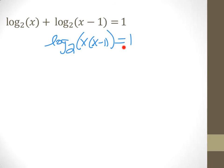Let's convert: 2 to the first equals what's inside. Multiplying that together gives x squared minus x, and now this is a quadratic. Subtract 2 from both sides.